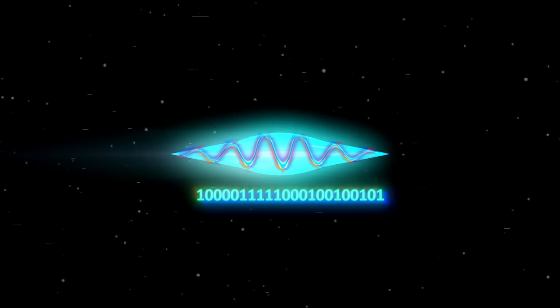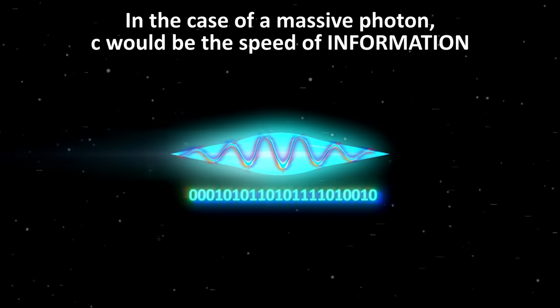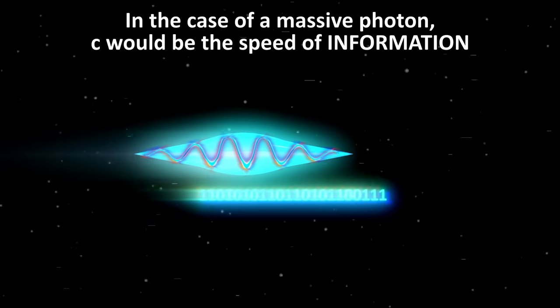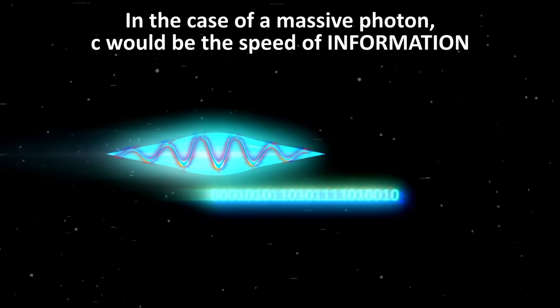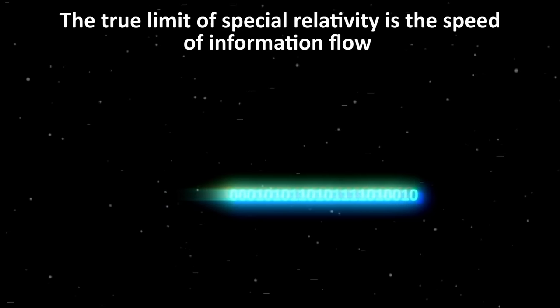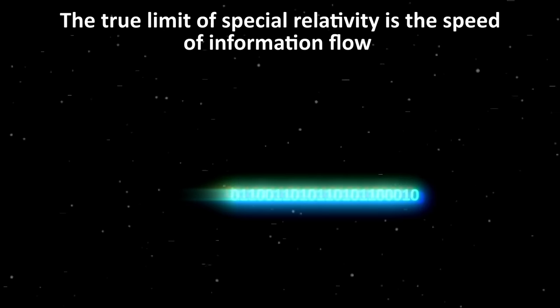In the case where the speed of light is less than c, then c would represent the speed of information, not the speed of light. This speed would be the maximum speed allowed in the universe. So the true limit of special relativity is the limit of information flow, the speed of causality, and not the speed of light.